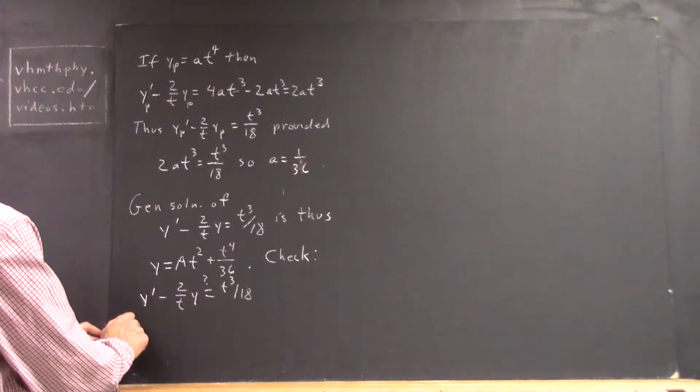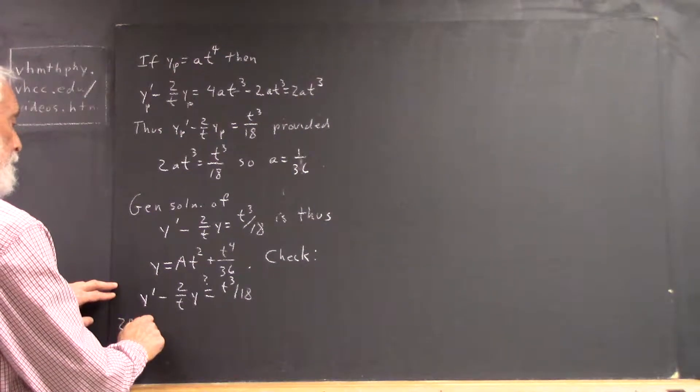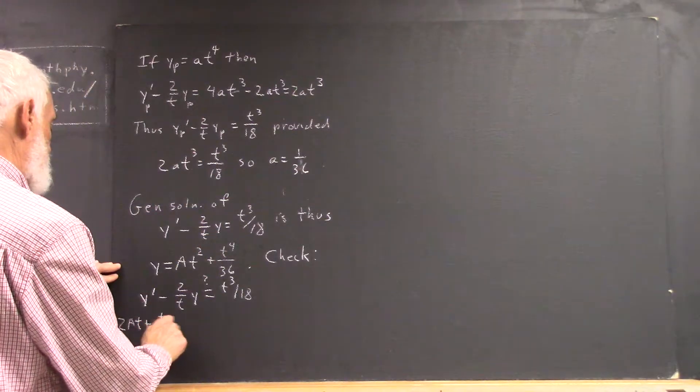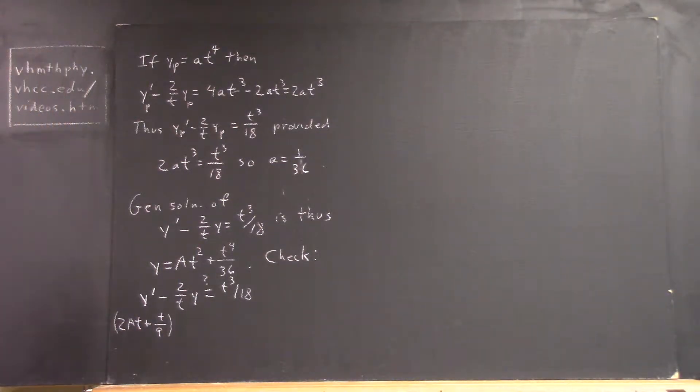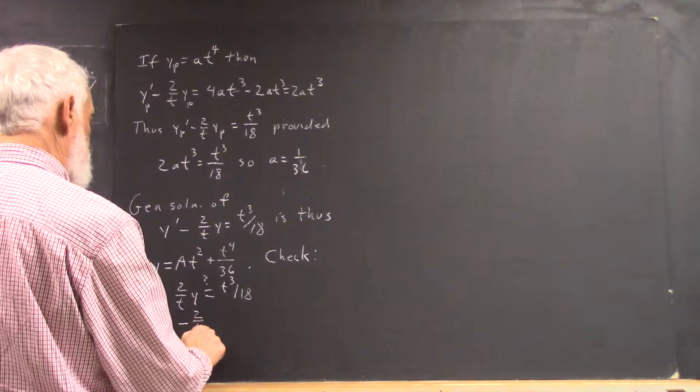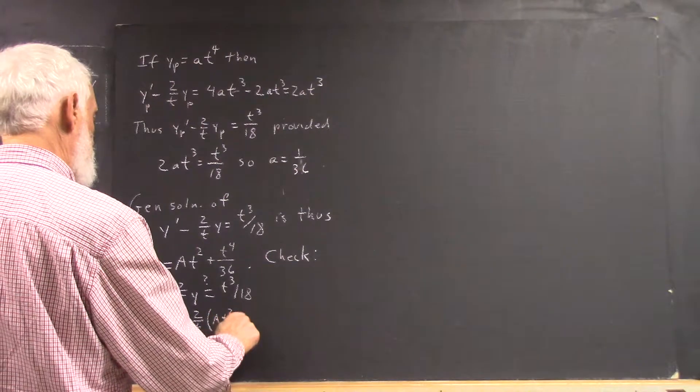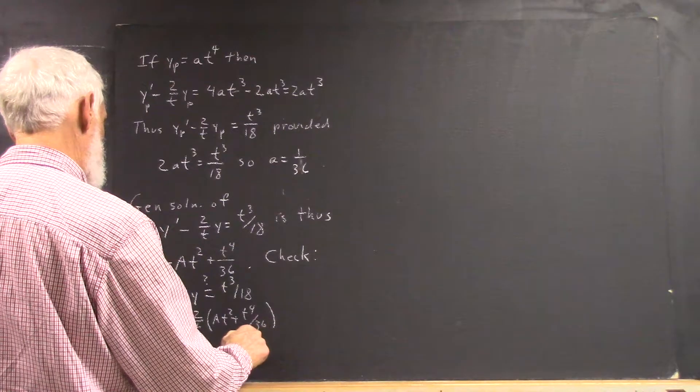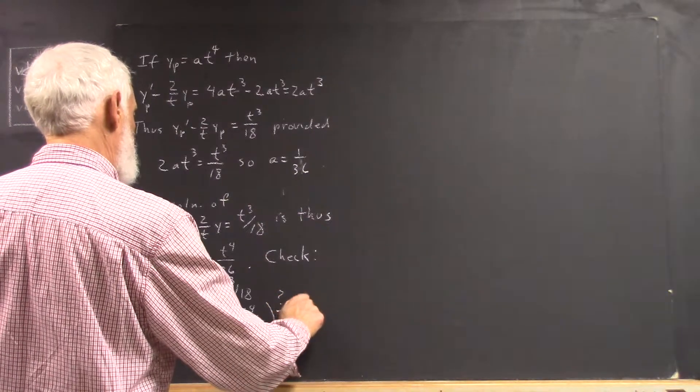Y prime is 2at plus the derivative of t to the fourth over 36, which is t cubed over 9. Then it's minus 2 over t times at squared plus t to the fourth over 36.